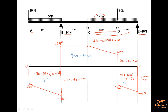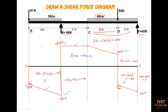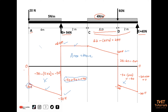On a shear force diagram, we mark the values at the principal points and also the shape of the line — a slope line indicates the presence of a UDL, and a horizontal line indicates no UDL. Try to draw the diagram as neatly as possible. The calculations I was writing were just to assist you — you do not have to show them on the diagram and they are not for mark purposes. I hope it helps and I hope you now understand how to draw a shear force diagram. Thank you.